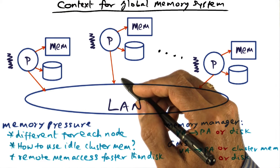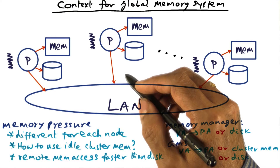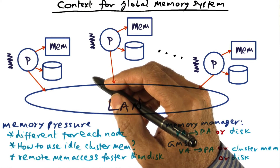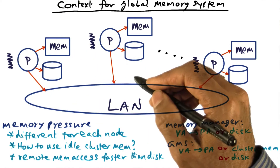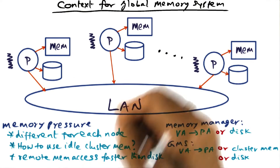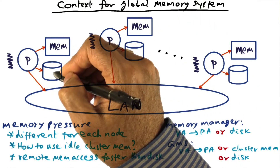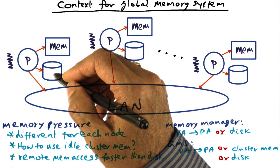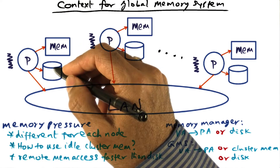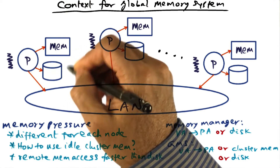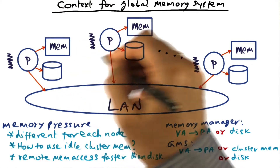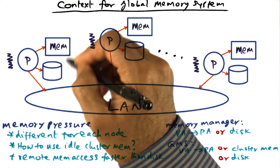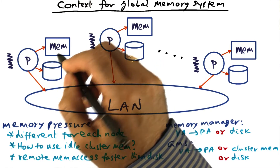With advances in local area networking gear, gigabit Ethernet connectivity is already available for desktops, and pretty soon 10 gigabit links are going to be common for connecting desktops to the local area network. This makes sending a page to remote memory, or fetching a page from remote memory, faster than sending it to a local disk. Typically, local disk access speeds are around 200 megabytes per second in transfer rate, and on top of that you have seek latency and rotation latency. So paging through the local area network to peer memories that are idle may be a good solution when memory pressure is experienced at any particular node in the cluster.